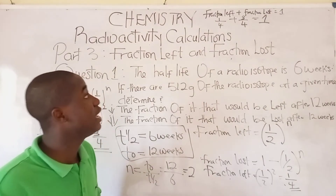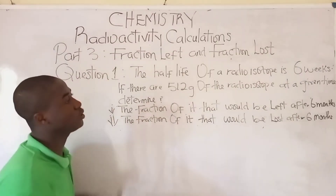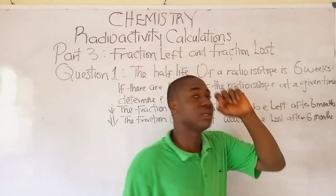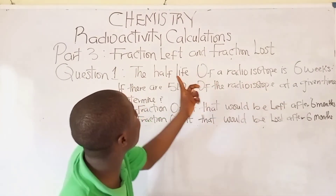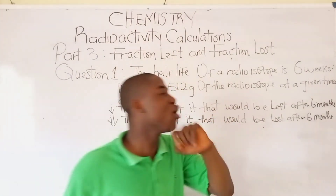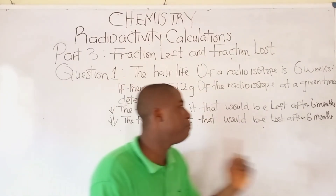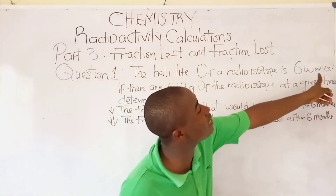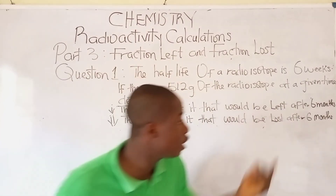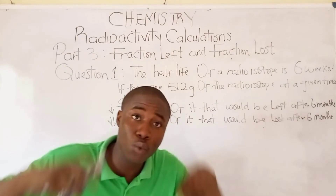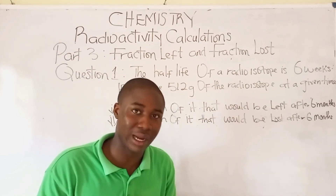I believe you can now solve questions based on fraction left and fraction lost. Now, this question is for you — I just changed the 12 weeks to 6 months. Since the half-life is in weeks, you must convert 6 months to weeks before computing. Don't solve in different SI units or you'll get a wrong answer. Six months is approximately 24 weeks, so do well to solve it and get the correct answer.